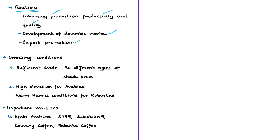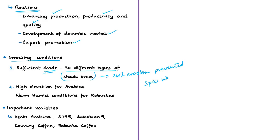Regarding growing conditions for Indian coffee, it is essential to provide proper shade to coffee plants to protect them from high radiation levels and rising temperatures. Nearly 50 different types of shade trees are found in Indian coffee plantations. These shade trees prevent soil erosion on sloping terrain, protect coffee plants from seasonal temperature fluctuations, and also host diverse flora and fauna.